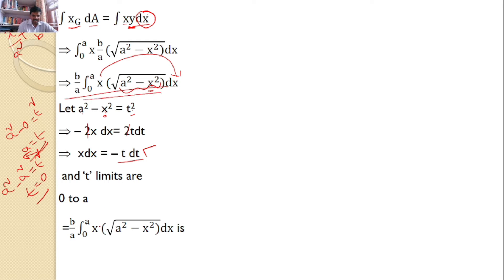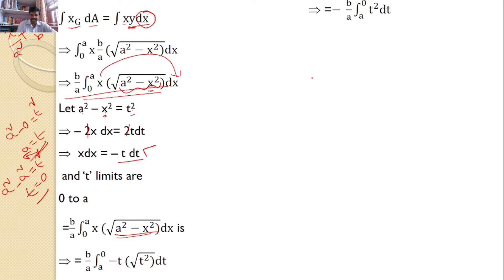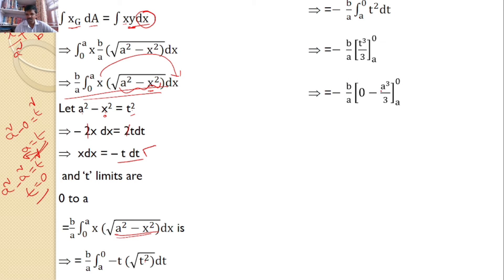The integral (B/A) ∫₀ᴬ X · √(A² − X²) DX becomes −(B/A) ∫ₐ⁰ T · T dT = −(B/A) ∫ₐ⁰ T² dT. Integrating: −(B/A) · [T³/3] from A to 0 = −(B/A)(0 − A³/3). Finally, ∫XG dA = BA²/3. This is equation number 1.